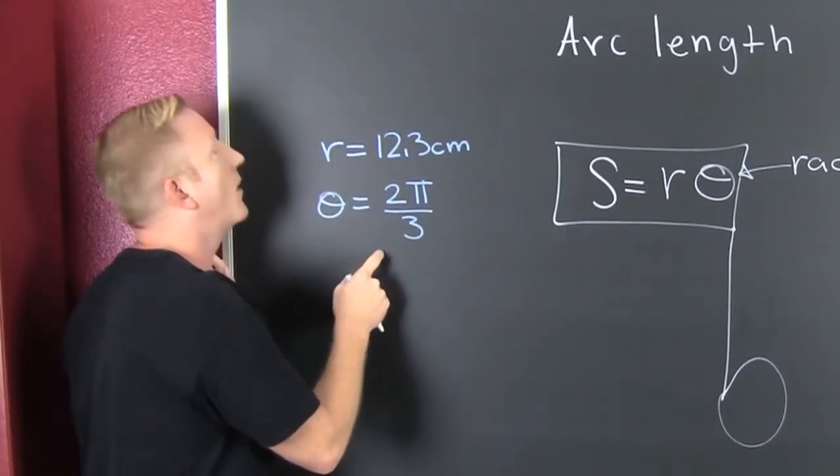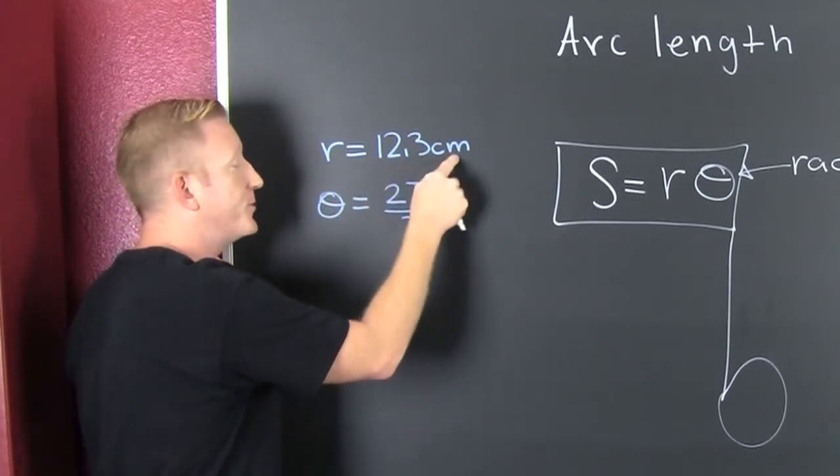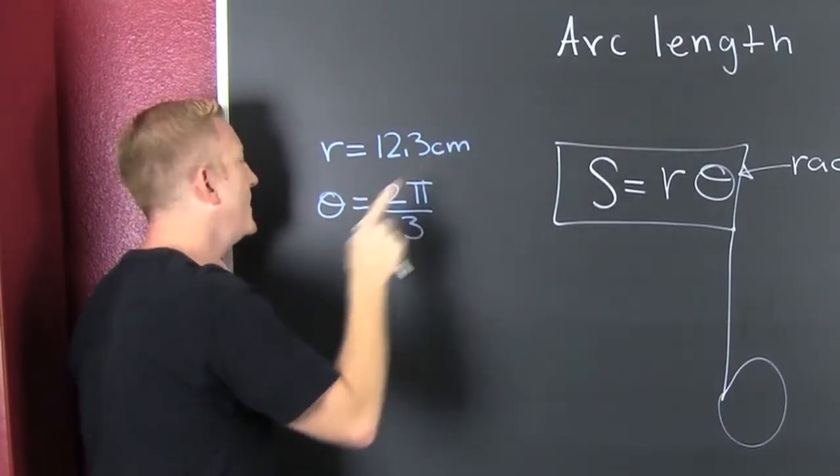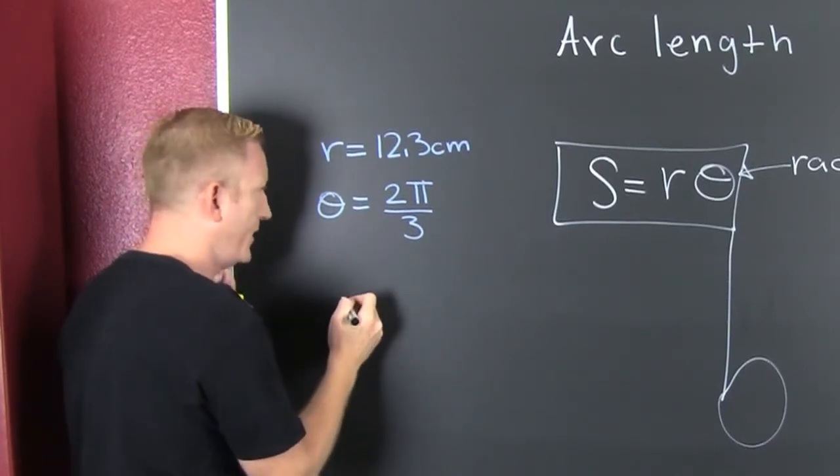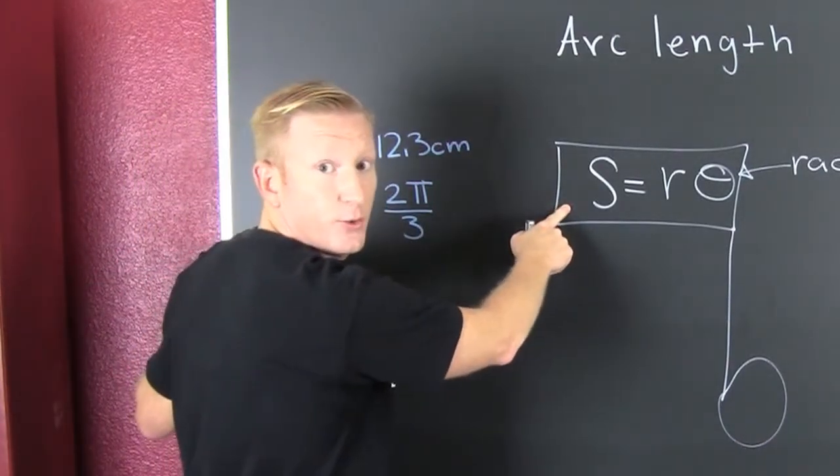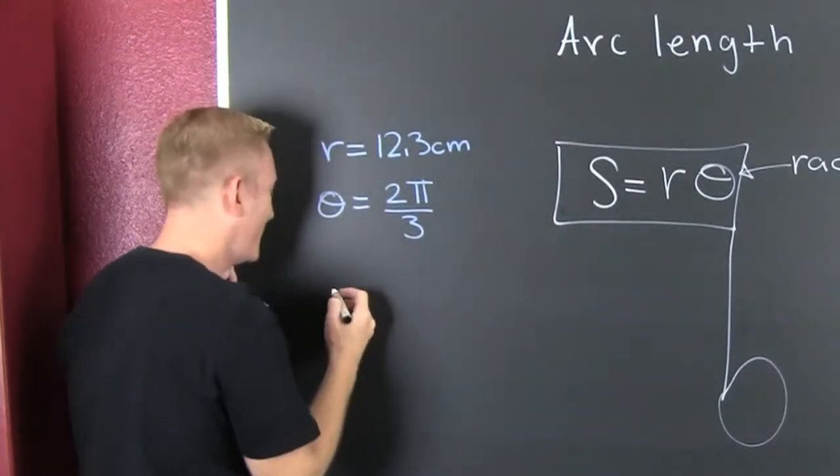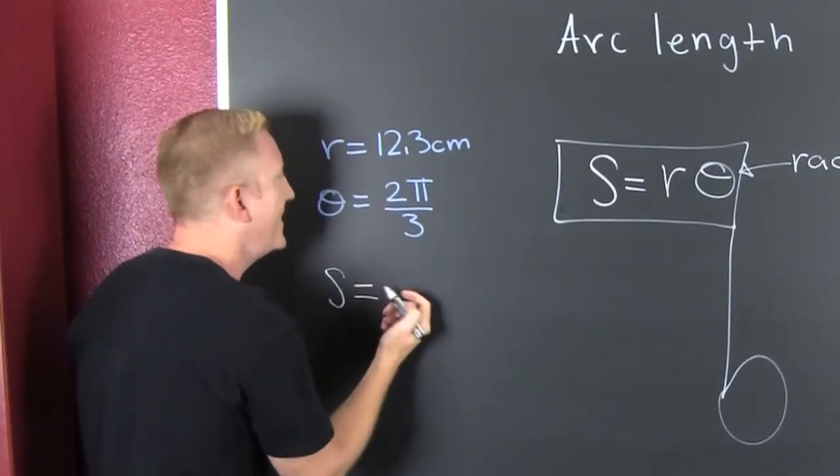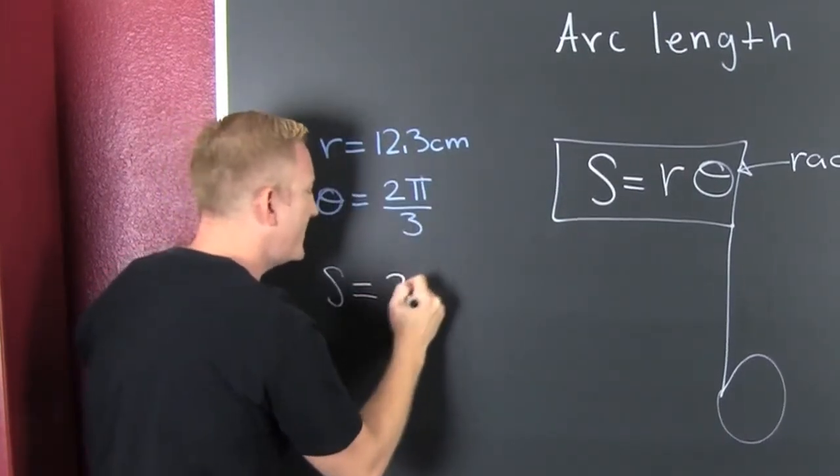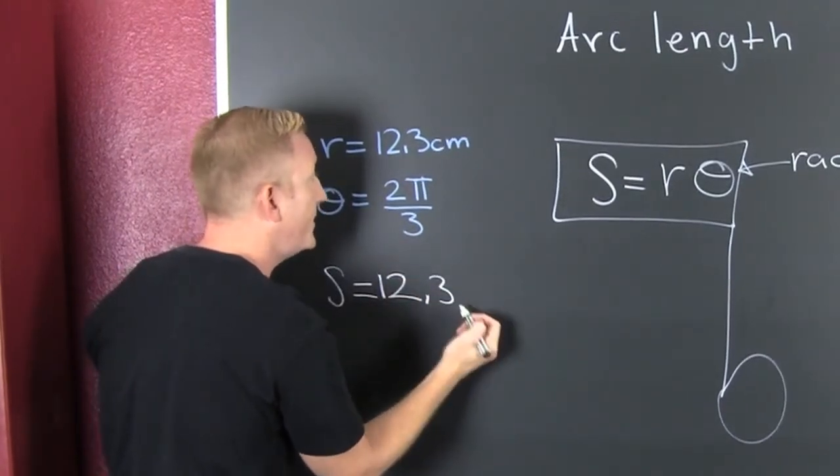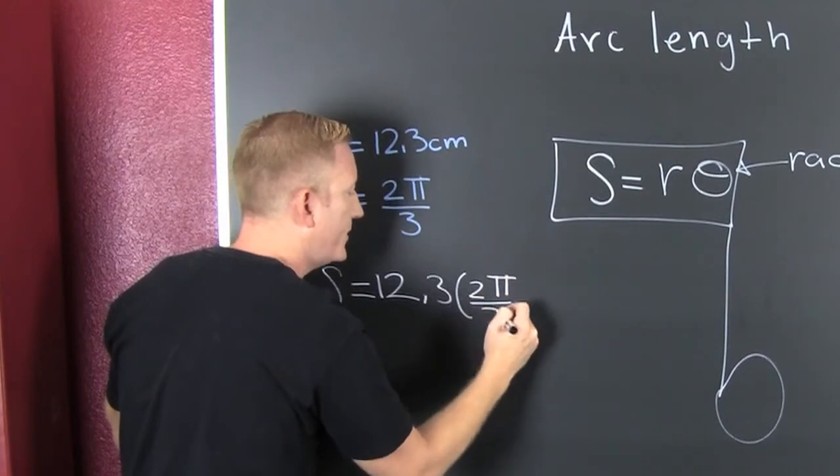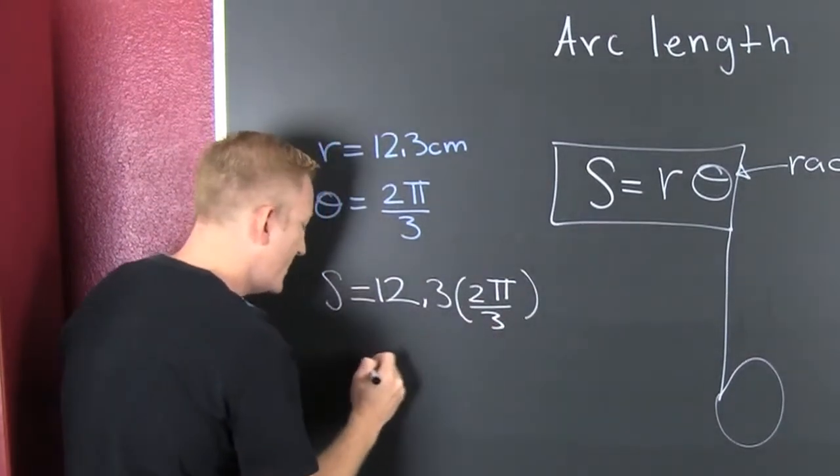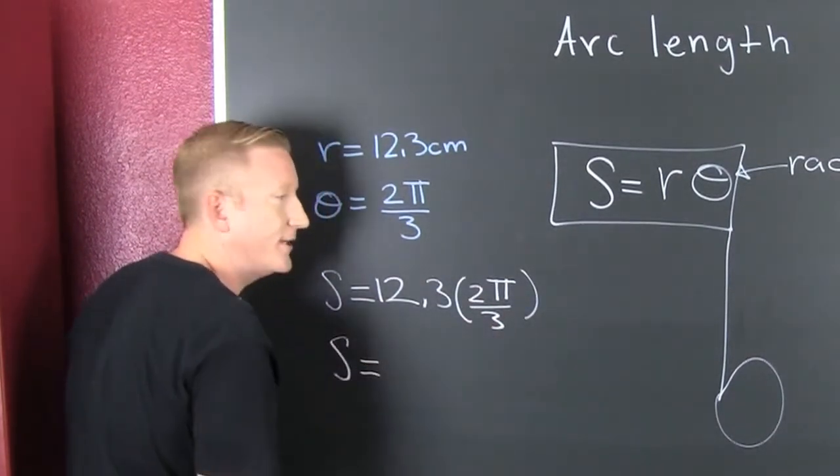Here they want us to find the arc length when our R is 12.3 centimeters. Well, what? And theta is 2 pi over 3. So what do we do? We go and we put it into our note. And we go, and our S. Yes. It's going to be 12.3 times 2 pi over 3. Oh boy. So we pound that out in our calculator.